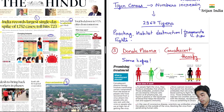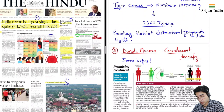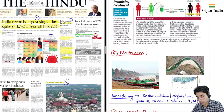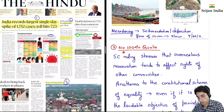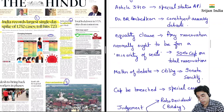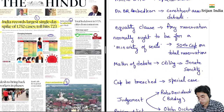Donate plasma ka matlab hoti hai convalescent therapy — jo recover patient hai, usse. Abhi donate plasma kuch trials ho rahe hai aur iske liye zyada demand a rahi hai. Then no takers — ismein hum geography dekhenge, Banaras ke Assi Ghaat aur Ganga ka meandering kaise ho raha hai, deposition aur siltation. Then no 100% quota — Supreme Court ka ruling hai. Phir Baba Sahib Ambedkar ne constituent assembly mein kya kaha tha, we'll get to know.